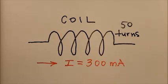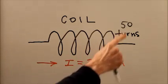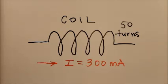We're talking about a coil of wire with 50 turns in it and we're driving 300 milliamperes through that coil, 300 milliamperes of current.